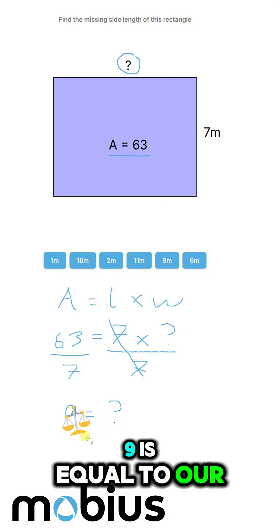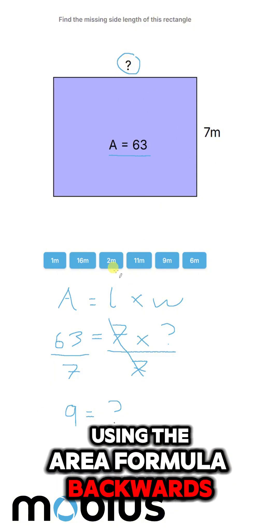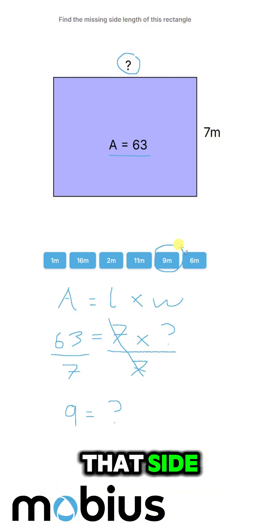Equal to our mystery side. Using the area formula backwards, we can solve for that side, and it's a length of nine.